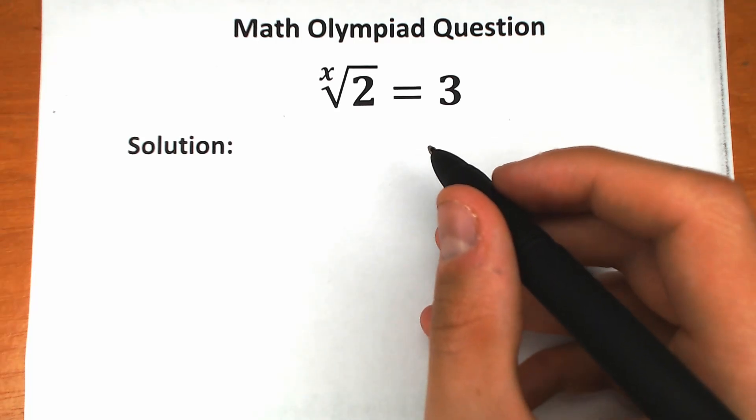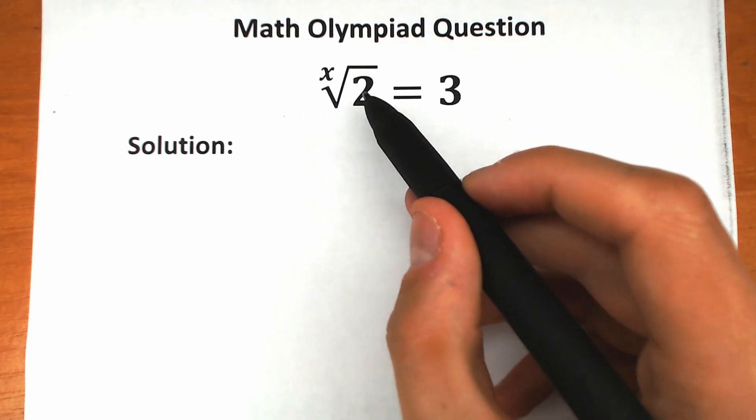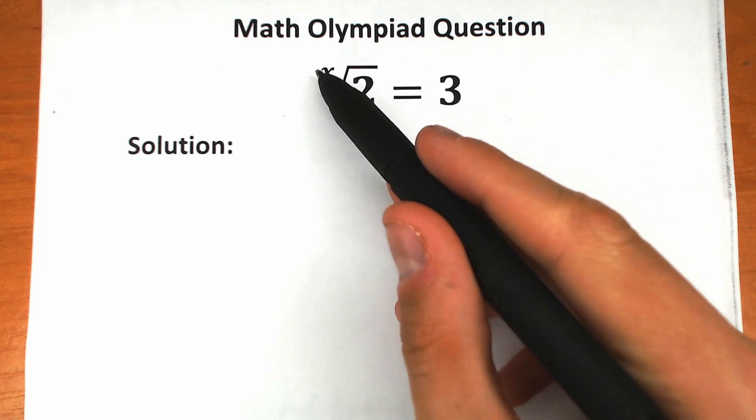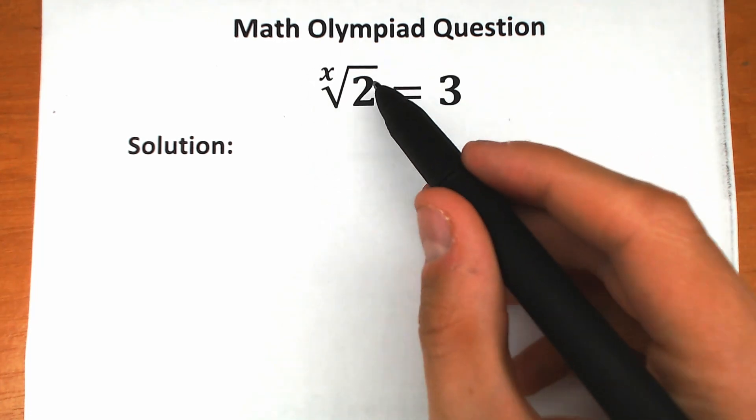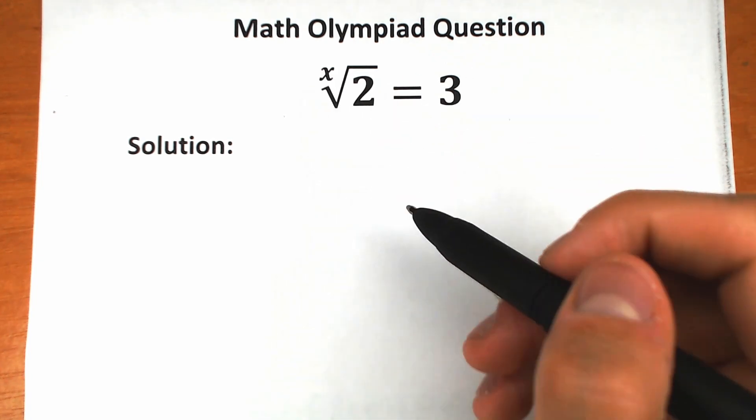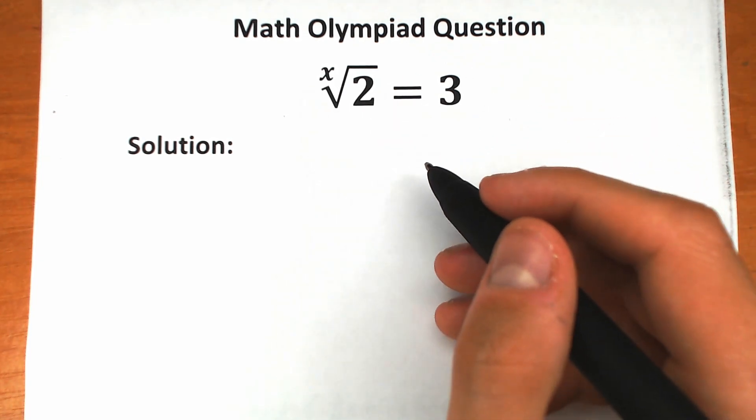Welcome back to my channel, Hi Mathematics, and quick challenge today! x root of 2 equals 3. This looks like a weird challenge because we don't prefer looking at x in this position - we prefer x right here as a power of 2. But what about this position? How can we solve this question?